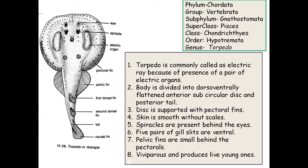The second example is Torpedo, which produces electric current and is therefore called the electric ray, due to the presence of a pair of electric organs. Classification: Phylum Chordata, Group Vertebrata, Subphylum Gnathostomata, Superclass Pisces, Class Chondrichthyes, Order Hypotremata, Genus Torpedo.